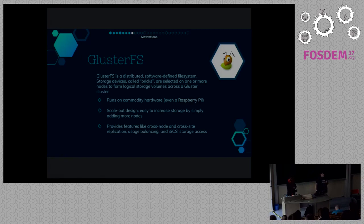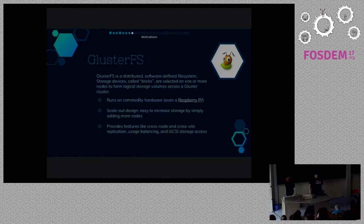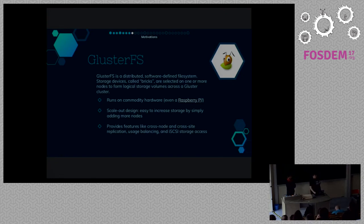Some cool things about this: Gluster was designed to run on commodity hardware — there's a blog post showing it running on a Raspberry Pi. It has a scale-out design, meaning it's easy to expand your storage just by adding more nodes. It provides useful features like cross-node replication, usage balancing, and iSCSI storage access.